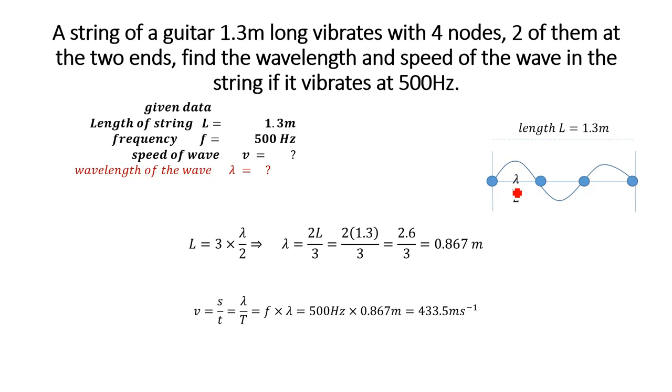Let's consider we have this string of a guitar. It has four nodes: node 1, node 2, node 3, and node 4. The total length of the string is 1.3 meters, and we know that lambda is the length between any two crests or troughs.